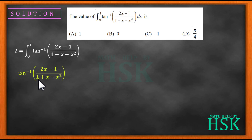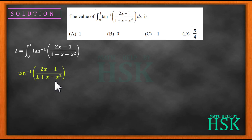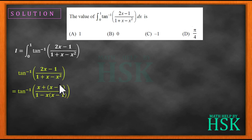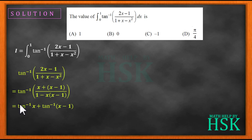Taking tan⁻¹ of (2x-1)/(1+x-x²), the trick here is to convert this value into the form of (a+b)/(1-ab). So I am going to write 2x as x+(x-1), and x-x² can be written as -x(x-1). So this value is in the form (a+b)/(1-ab) and can be written as tan⁻¹(x) + tan⁻¹(x-1).